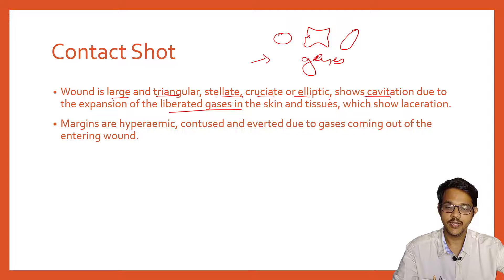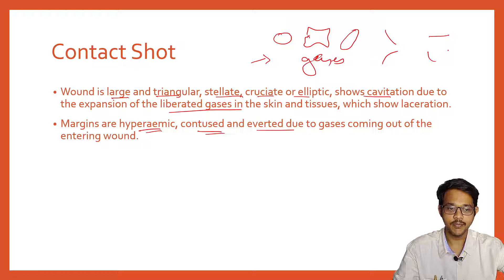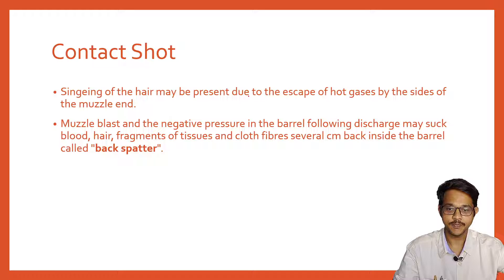When gases enter the skin they may explode inside and sometimes rupture the skin, causing lacerations. The margins of the wound are hyperemic, contused, and everted due to gases. Typically, entrance wounds are inverted, but in contact wounds the skin becomes everted because the gases entering the skin push it outward, creating everted edges.